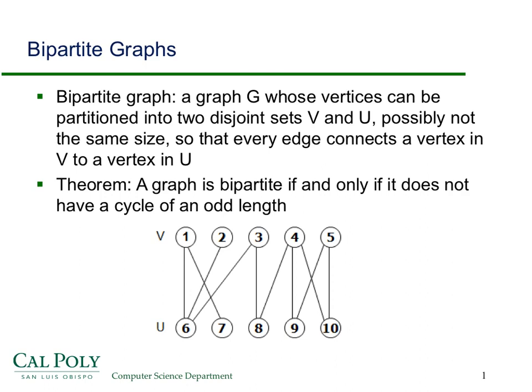It turns out a graph is bipartite if and only if it does not have a cycle of odd length. You might stop and try to convince yourself that that's true. It's pretty easy to see if it has a cycle of odd length that it can't possibly be bipartite.